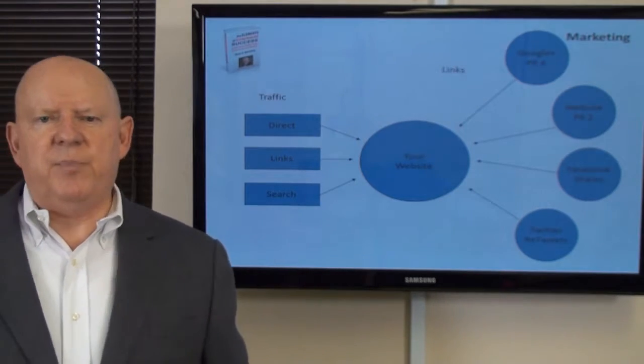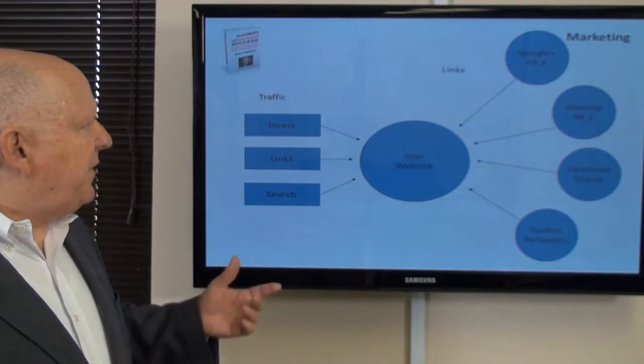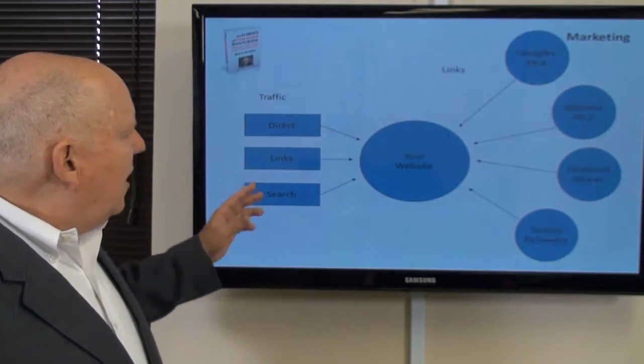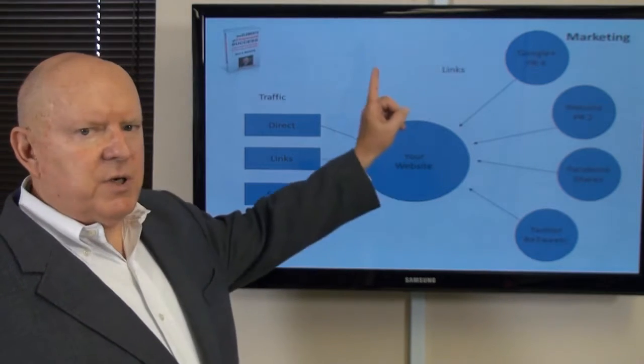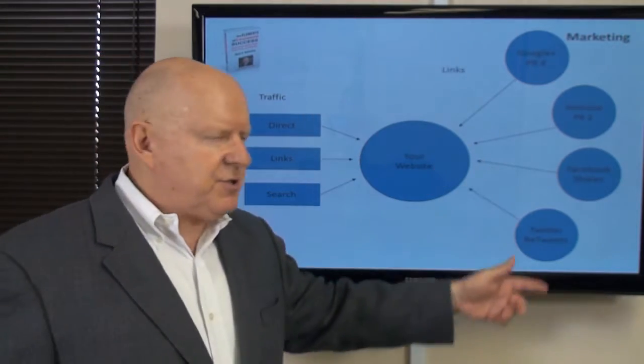If you're trying to get onto page one of Google, your job is to manipulate those variables. So fundamentally, what you're looking at is if this is your website and you want it to go higher on page rank of Google, you've got two major factors: traffic and links.